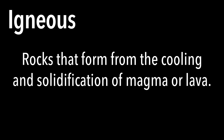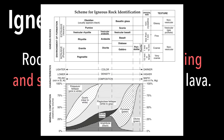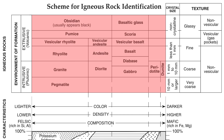Let's begin by looking at igneous rocks. These are rocks that form from the cooling and solidification of magma or lava. Looking at the reference table on igneous rocks, there are 17 igneous rocks shown in bold with a whole bunch of characteristics. We begin with rocks referred to as being extrusive or volcanic, meaning that lava erupted on Earth's surface and cooled quickly, forming these rocks.